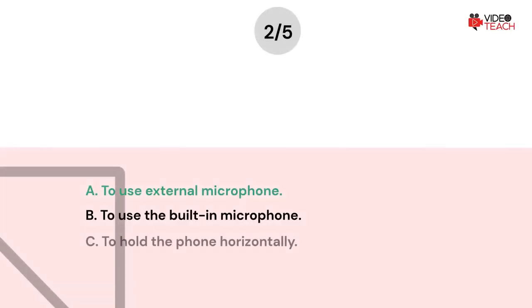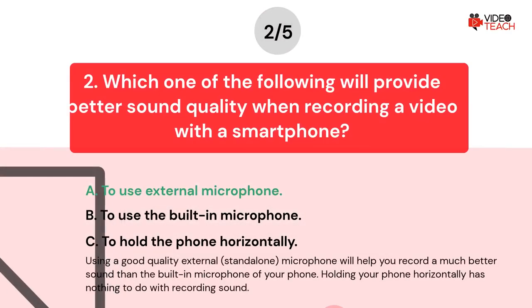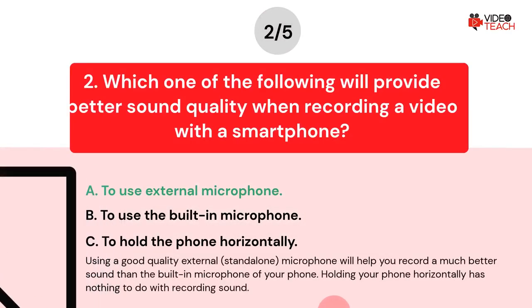The correct answer is Option A. Using a good quality external standalone microphone will help you record much better sound than the built-in microphone of your phone. Holding your phone horizontally has nothing to do with recording sound.